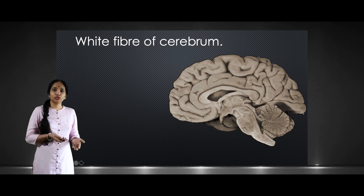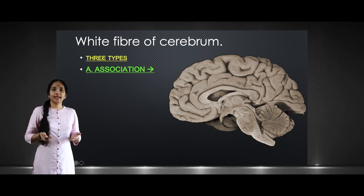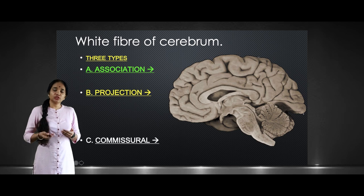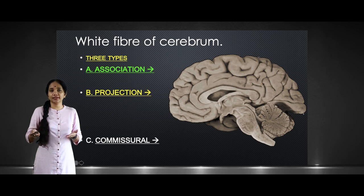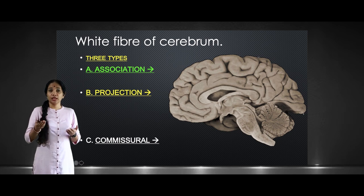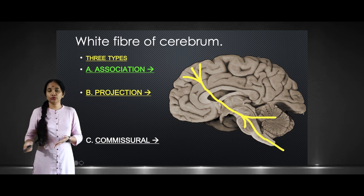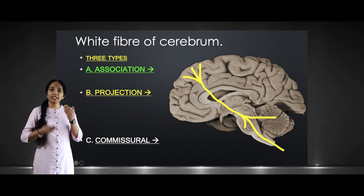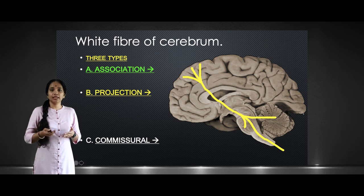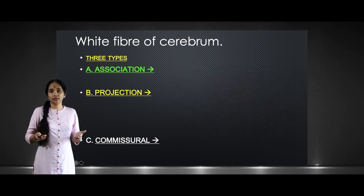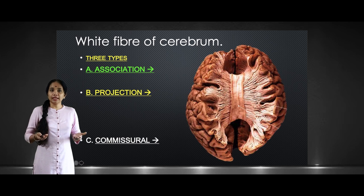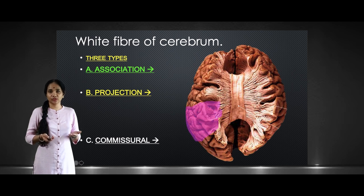They are classified into three types: association fibers, projection fibers, and commissural fibers. Association fibers are short or long fibers which connect adjacent areas of gyri or sulci in the same hemisphere. Projection fibers connect higher areas of the cortex down to lower areas — a vertical connection between different parts of the central nervous system. Commissural fibers connect similar areas on two hemispheres, for example, connecting the two frontal lobes or the two parietal lobes.